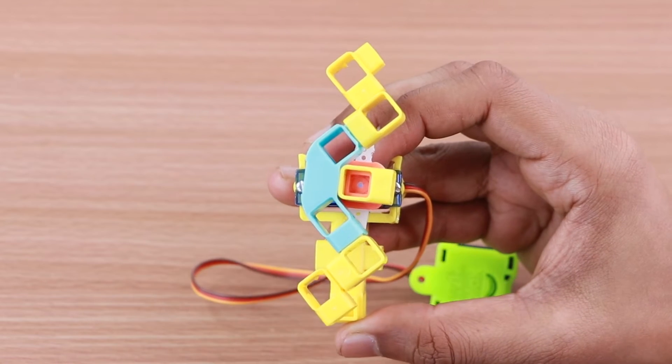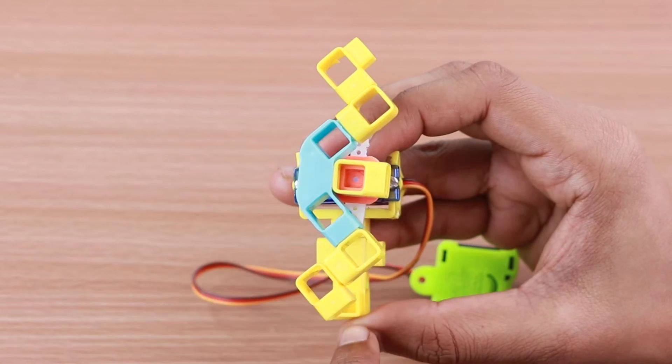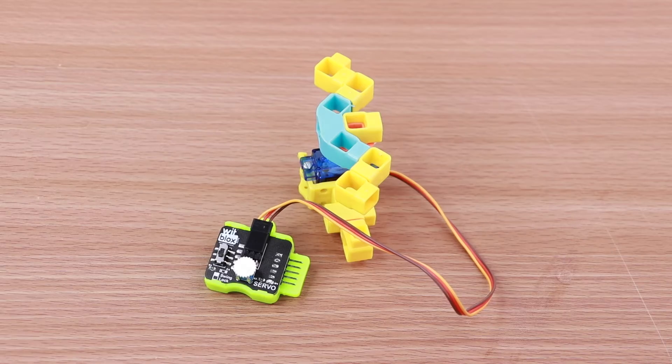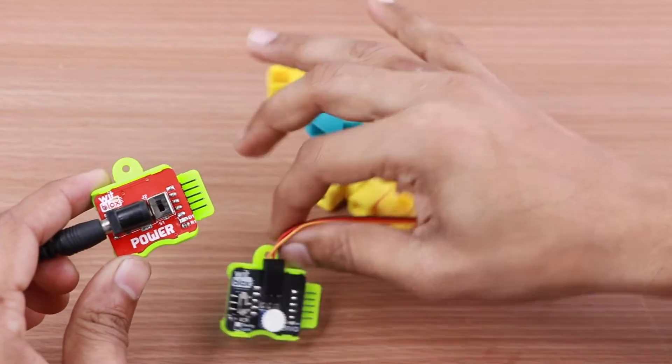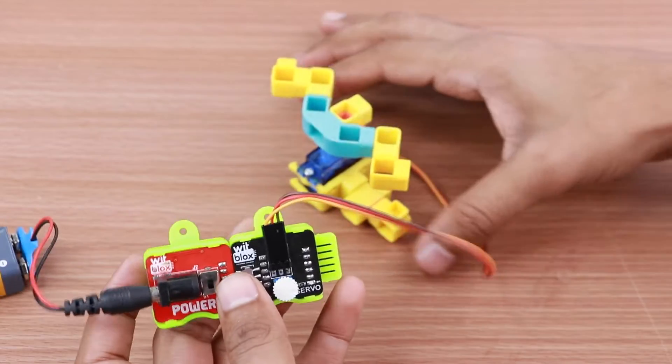Make sure that the shaft is in the vertical position as shown. Check the shaft movement by connecting the servo blocks to the power blocks and switching it on.